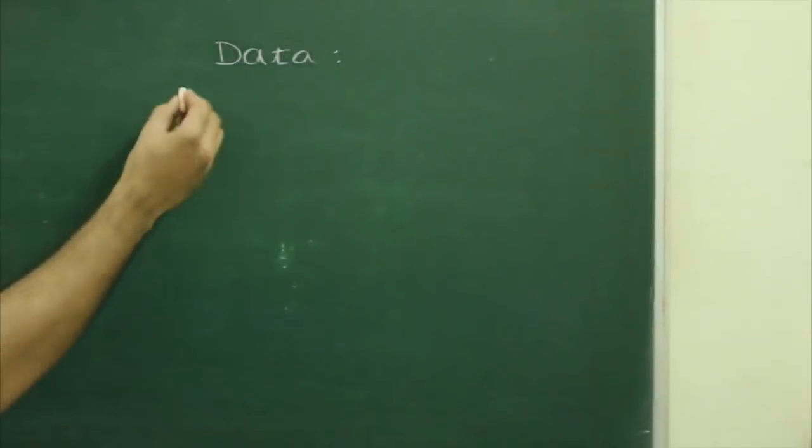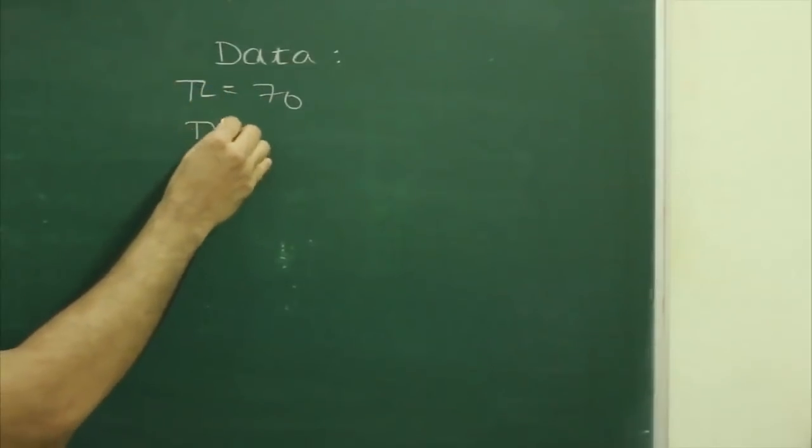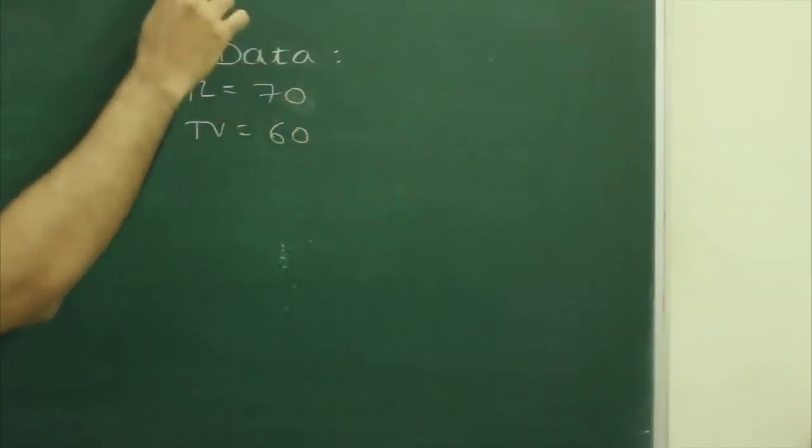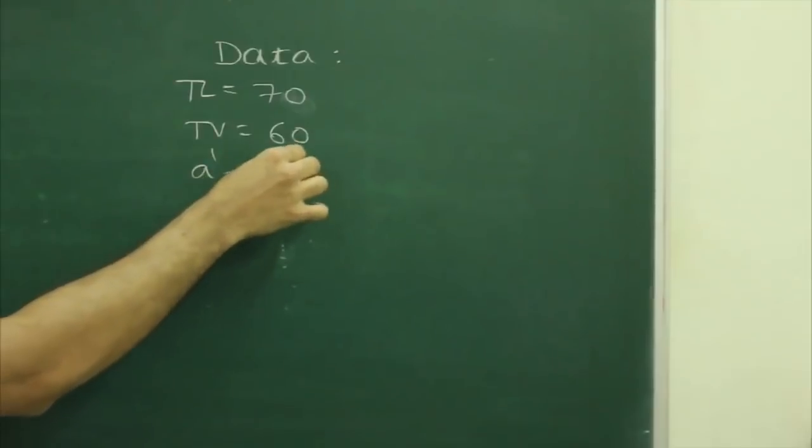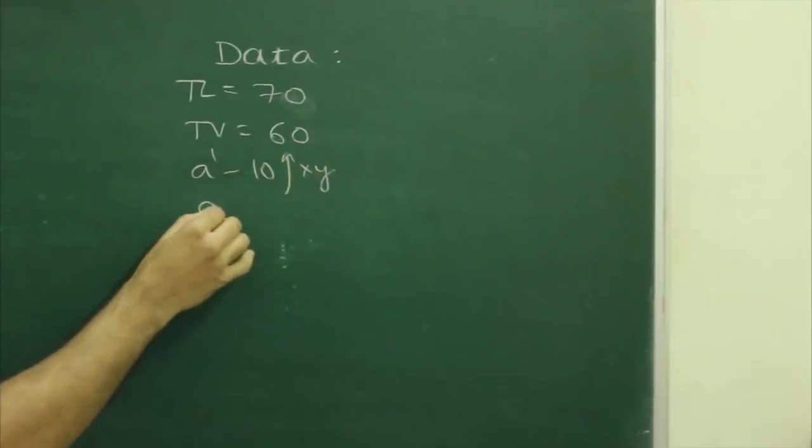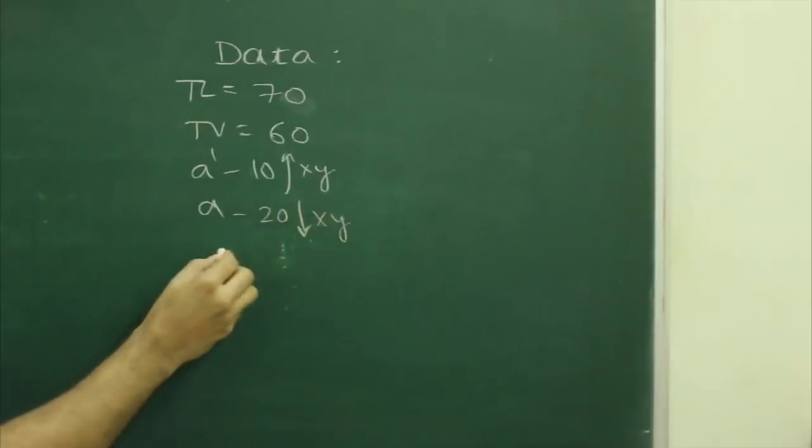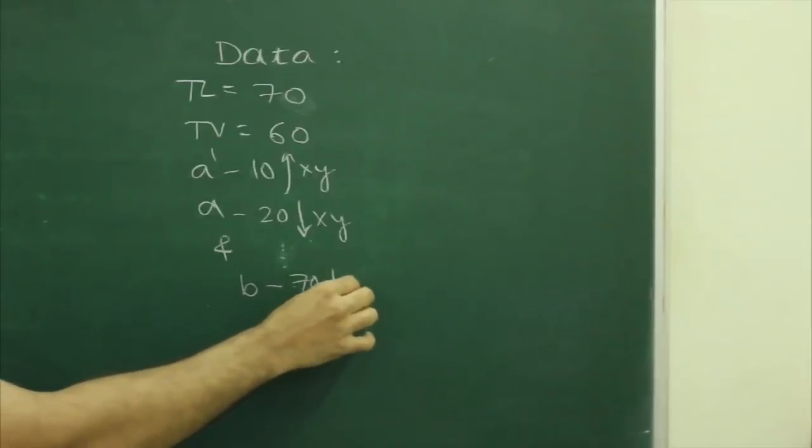First I will write the given data: true length 70, top view 60, then A' 10mm above xy plane, A' 20 below xy plane, and B' 70mm below xy plane.